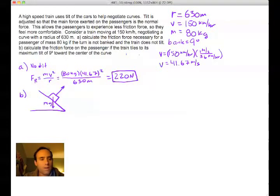So 80 kilograms, again, the velocity that we're using is 41.67 seconds. And that's squared, be careful of that. And that's over 630 meters. Once you do that, you find that the force or the frictional force necessary of the passenger is 220 newtons. And so that's the force necessary or the force that the passenger sort of withstands if the turn isn't banked.